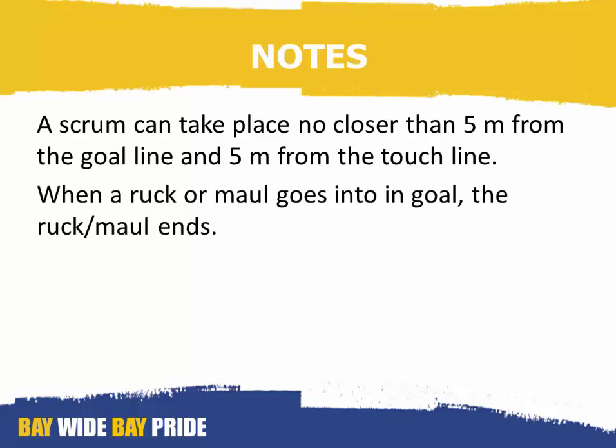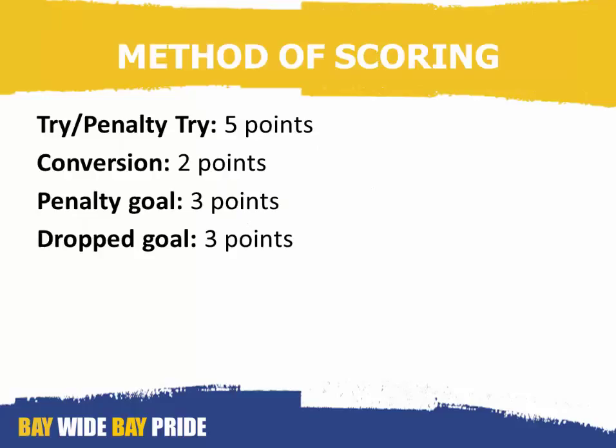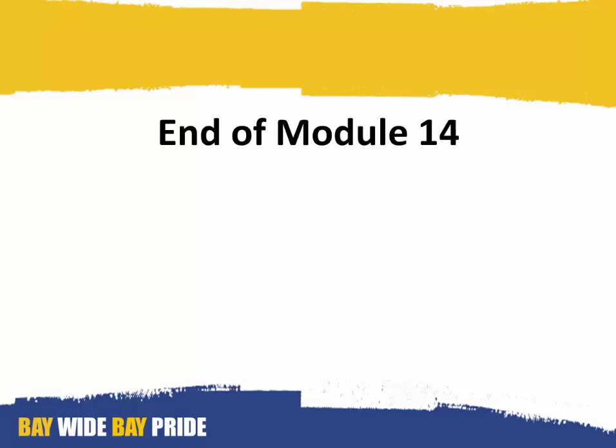When a ruck or maul goes into in goal, the ruck or maul ends. The method of scoring is as follows: a try or a penalty try is worth five points; a conversion is worth two points; a penalty goal is worth three points; and a drop goal is worth three points. A goal is where a player scores by kicking the ball over an opponent's crossbar and between the goal posts.